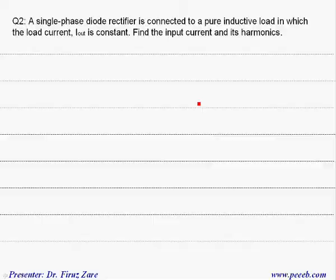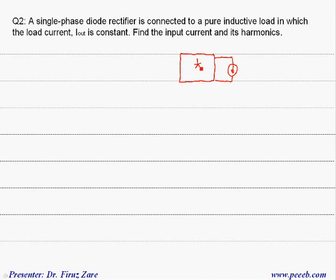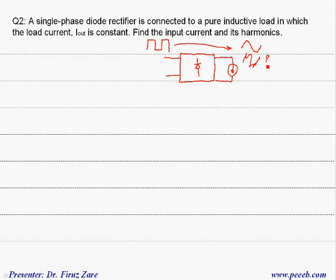Now we consider a diode rectifier connected to a pure inductive load. We treat the pure inductive load as a current source. The point is that the input current is not a sine wave — the input current is a square wave. This square wave consists of a fundamental sine wave plus harmonics. To find these harmonics, we use Fourier analysis.